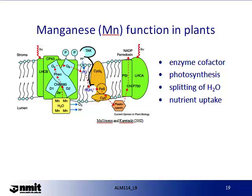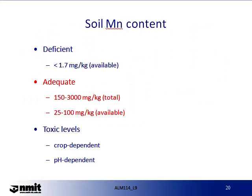Manganese functions in plants control several oxidation-reduction systems and photosynthesis, including the splitting of water. It functions with enzyme systems involved in the breakdown of carbohydrates and nitrogen metabolism, is integrated in nutrient uptake, and is involved in specific enzyme co-factors. Lindsay in 1979 estimated the average total soil concentration at about 600 parts per million. Manganese is found in the soil as a metal; metals sorb strongly because they are generally positively charged and most soil surfaces such as clay, organic matter or hydroxides are negatively charged. Therefore, manganese availability in the soil is directly related to the cation exchange capacity of the soil.